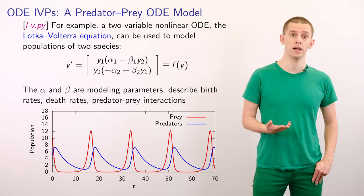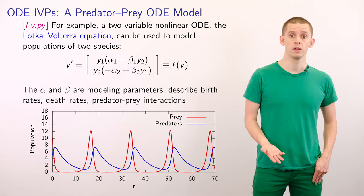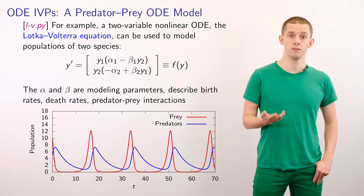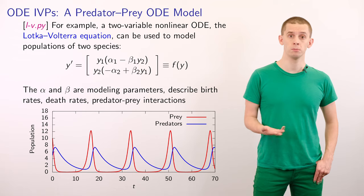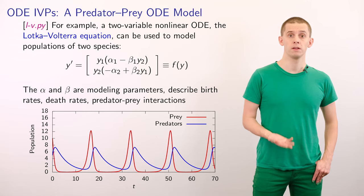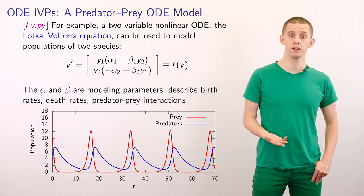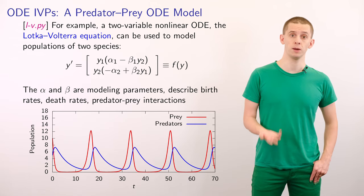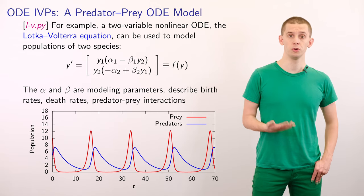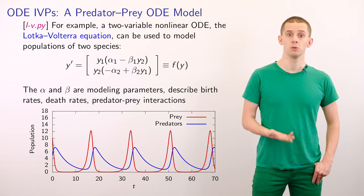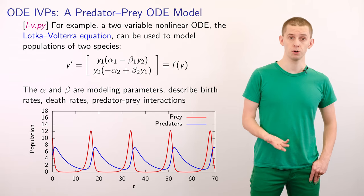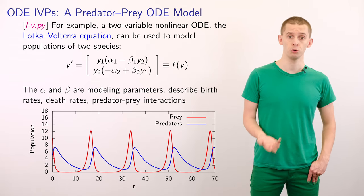And that will be given by alpha1 times y1. We'll also have that prey are eaten by the predators, and that will correspond to a term minus beta1 times y1 times y2. And we suppose that the rate at which prey are eaten is proportional to that product of the two populations.